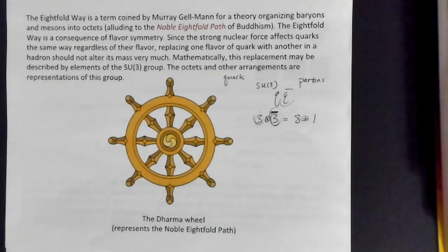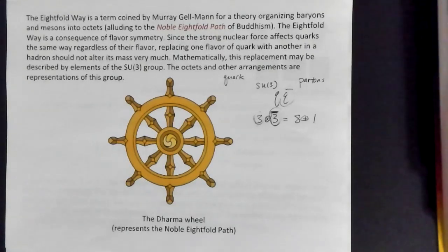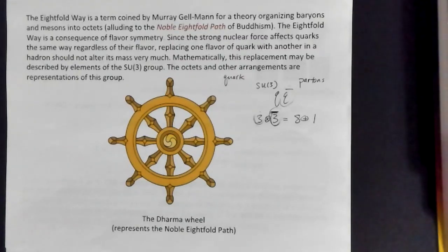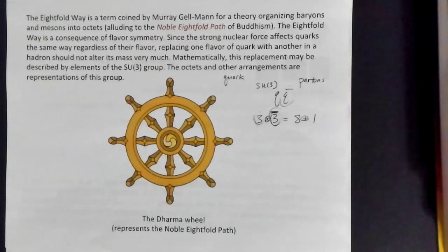People set about to classify these particles, just like we try to classify similar chemical elements together, as Mendeleev did for the periodic table. They were looking for particles from accelerator experiments that were similar to each other — similar in the sense that they had similar masses, but maybe different charges or other properties.